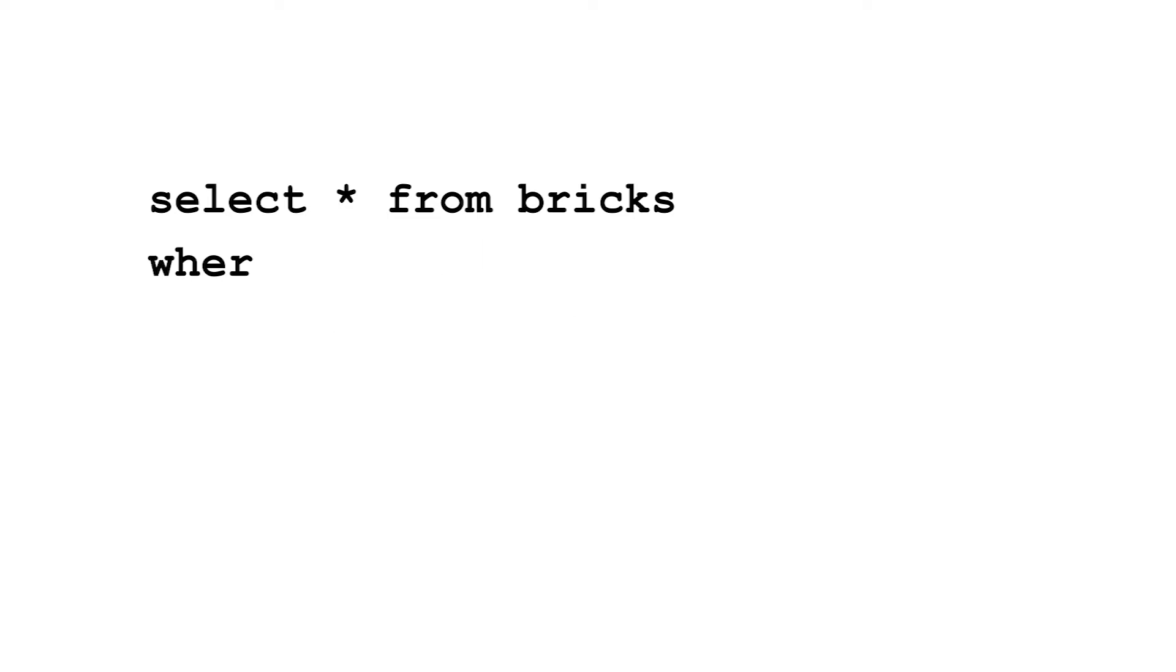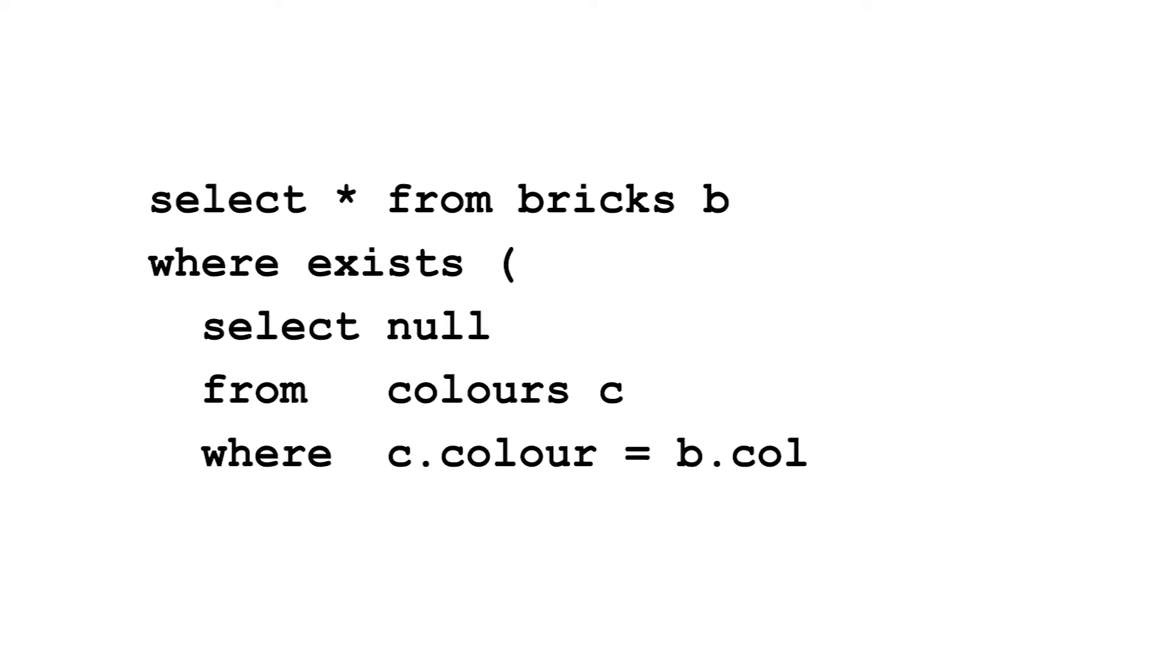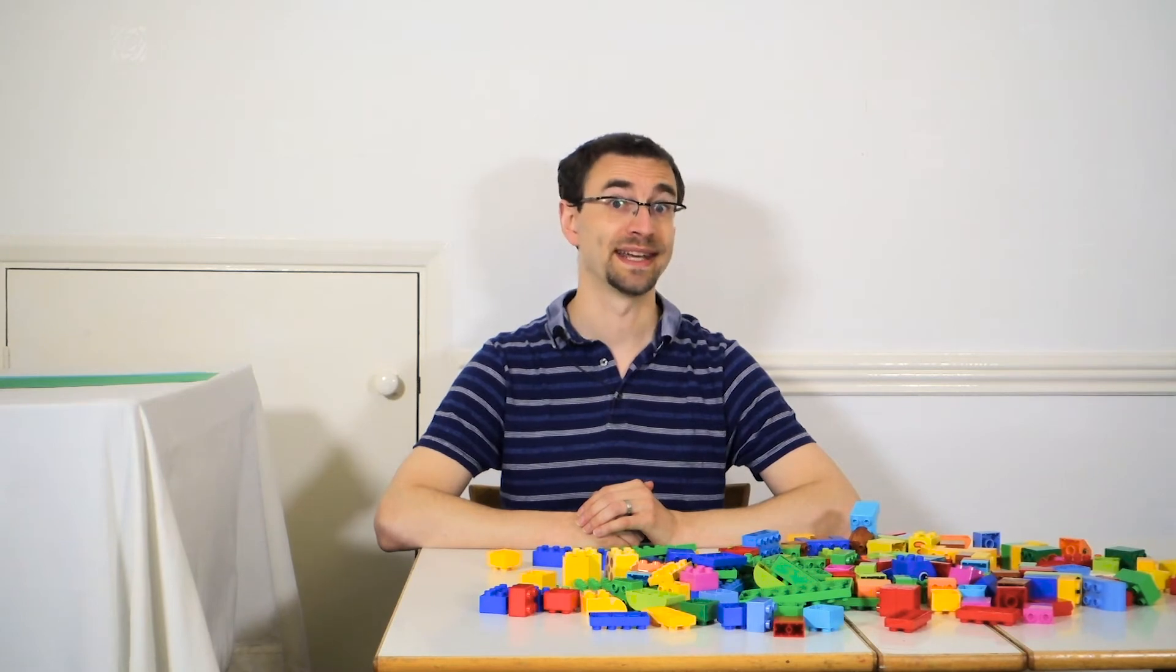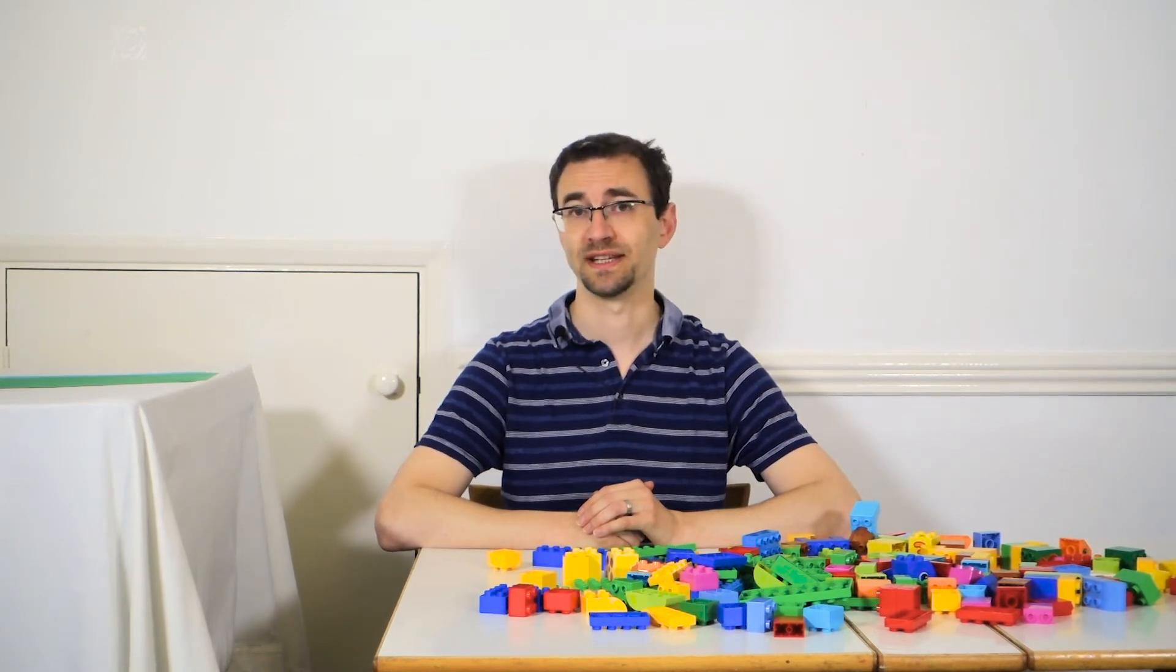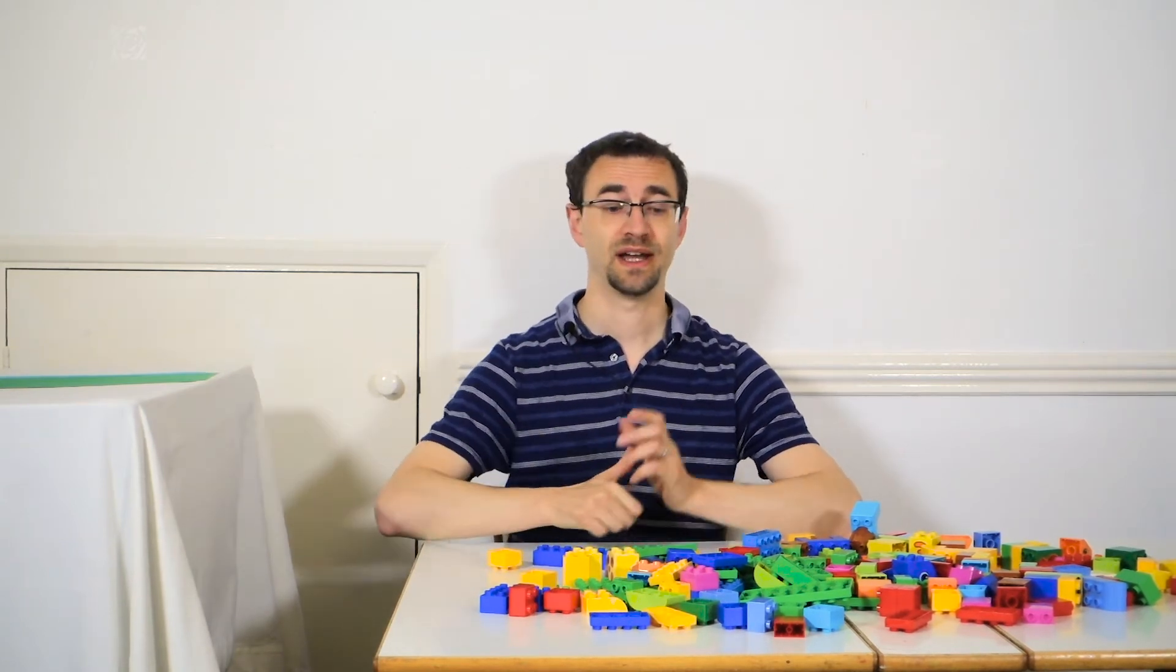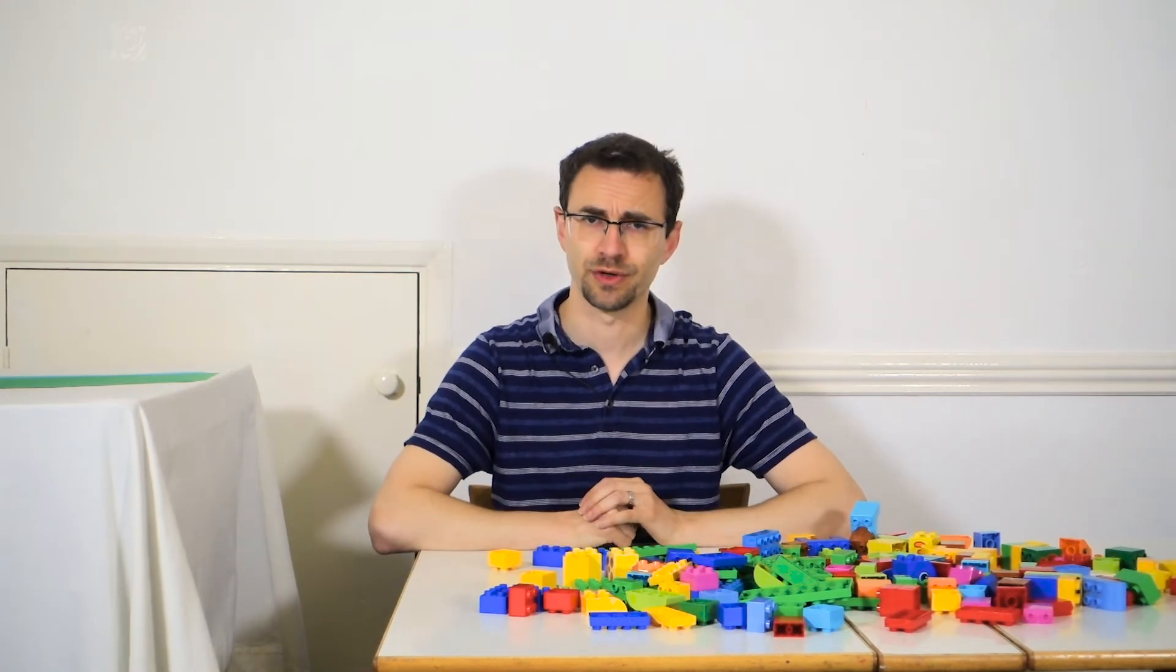Or you could replace IN with EXISTS. This gives you all the bricks where the colours query returns at least one row. This leads to an important difference between IN and EXISTS. Using IN, you can query the colours table and you'll only get the matching bricks without having to join them.